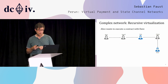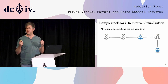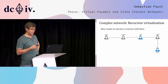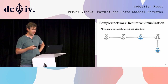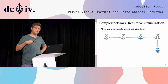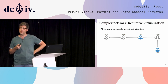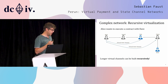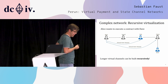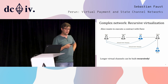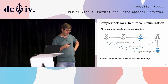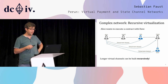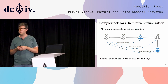We would also like to capture more complicated networks. We can apply this virtualization technique recursively. For example, Alice can first create a virtual state channel with Bob, then over that virtual channel create another virtual state channel with Claire, and continue like this until Alice finally reaches Dave. Then they can execute their contracts off-chain in this final channel.